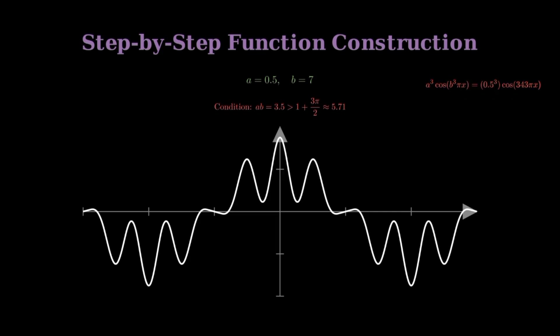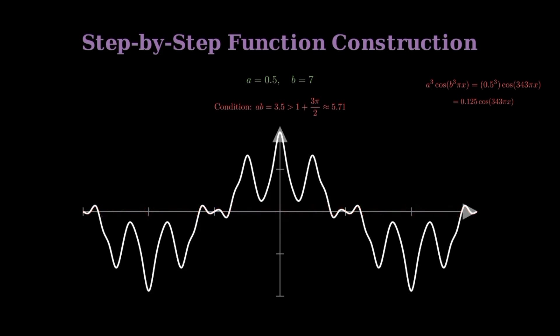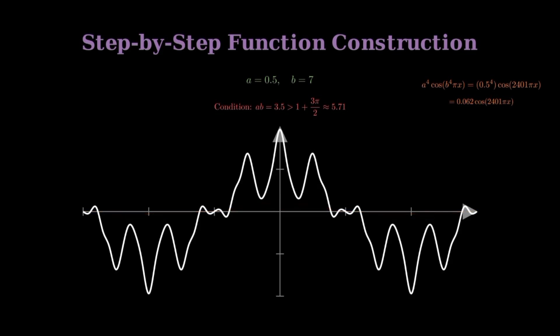As we add the fourth term, 0.125 times cosine of 343 pi x, and the fifth term with frequency 2,401, we see an incredible pattern emerging. Each new term oscillates faster and faster, yet with decreasing amplitude.